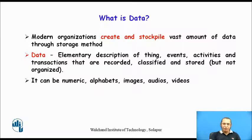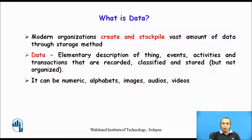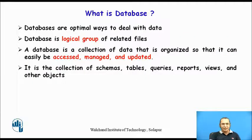We have already seen what is data in a database. Data is nothing but an elementary description of things, events, activities and transactions that are recorded, classified and stored but may not be in an organized way. Data can consist of numbers, strings, alphabets, alphanumerical values, images, audios, and videos. Everything stored as a description of a thing, event or activity is called data. If we store data in an organized way, then it is called a database.